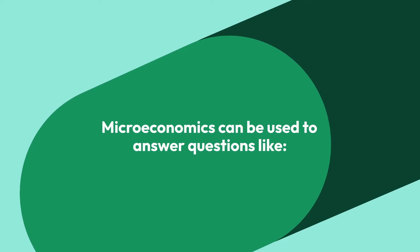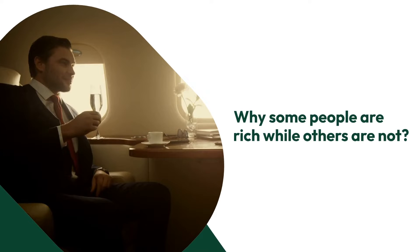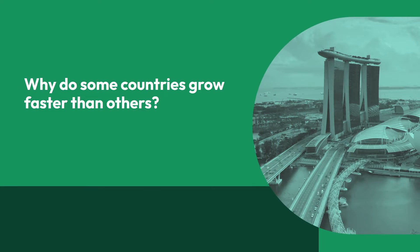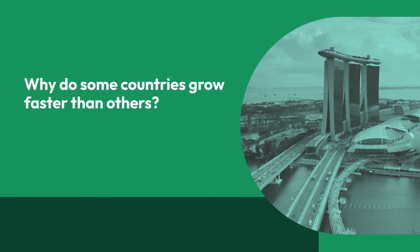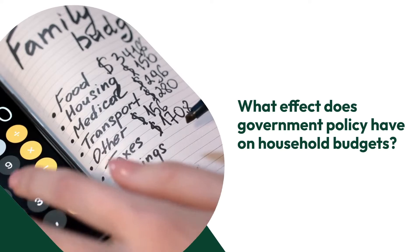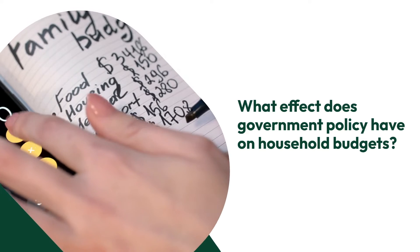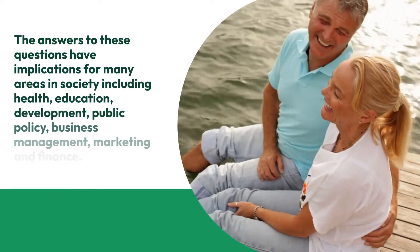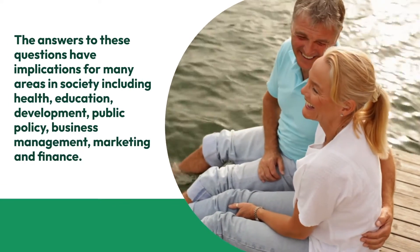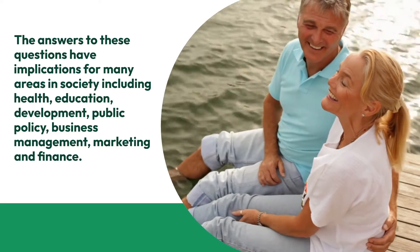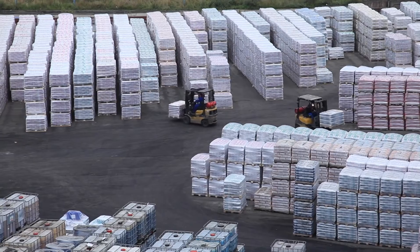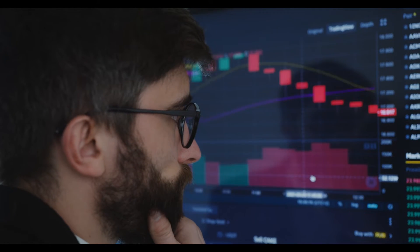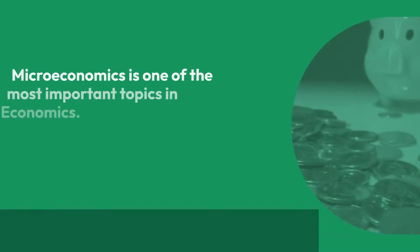Microeconomics can be used to answer questions like: Why are some people rich while others are not? Why do some countries grow faster than others? What effect does government policy have on household budgets? The answers to these questions have implications for many areas in society, including health, education, development, public policy, business management, marketing, and finance.